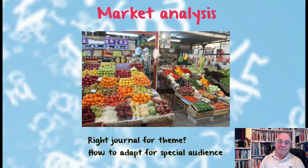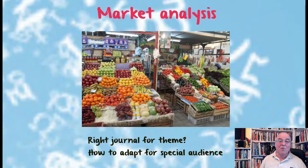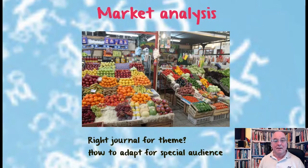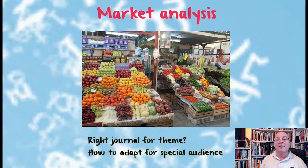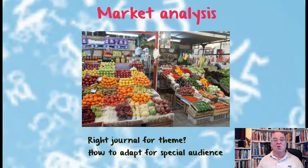The next thing you need to do is some market analysis. Make sure that the message you've got to share with other people is going to the right audience. You have to make sure that your theme is appropriate for the specific format you want to present it in, and how to adapt it for different audiences. Check out the audience — make sure the audience you want to write for actually wants to hear your message, and that you're going into the right sort of journals or publications.